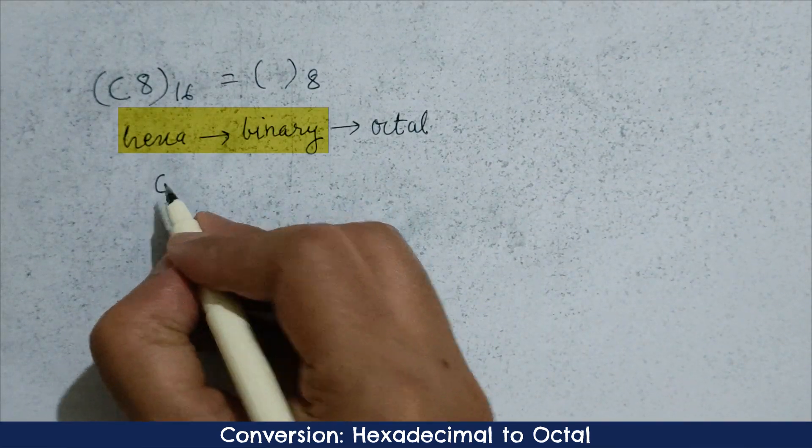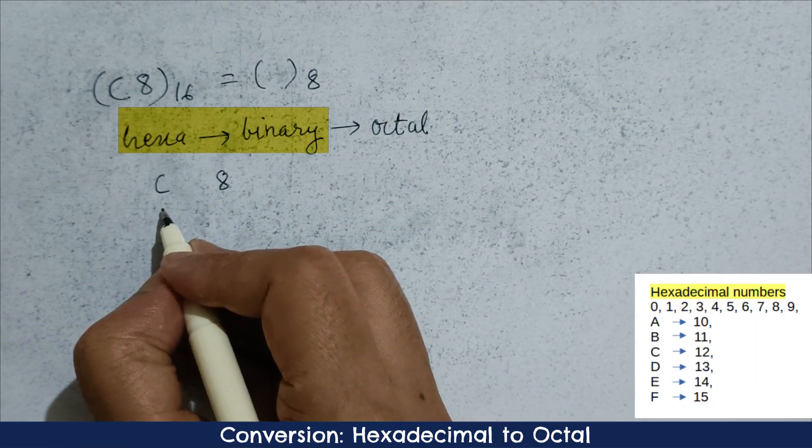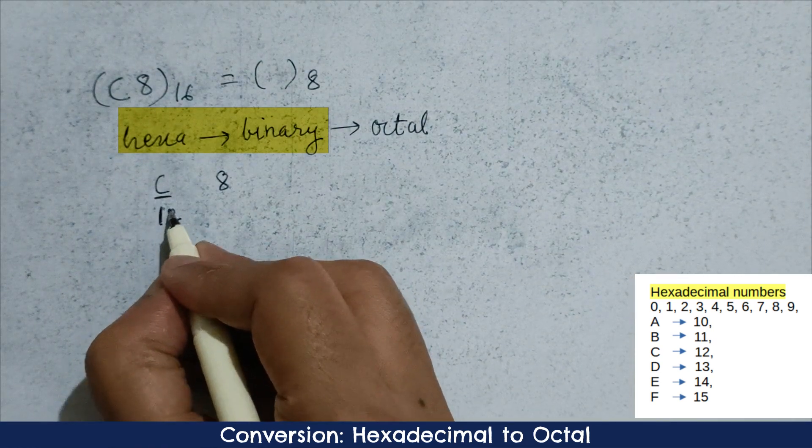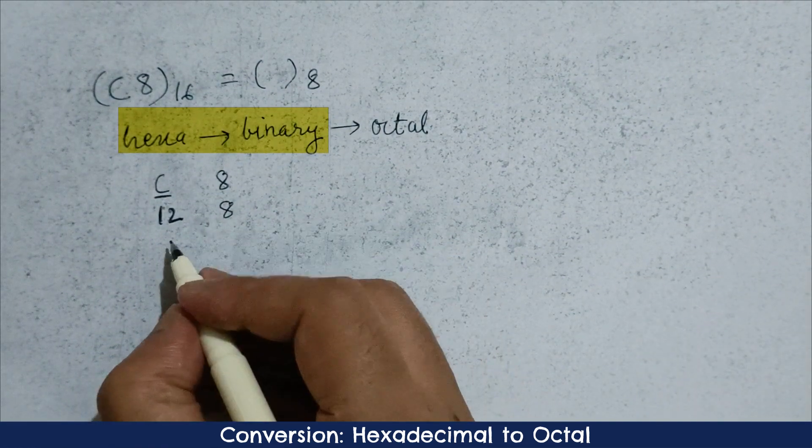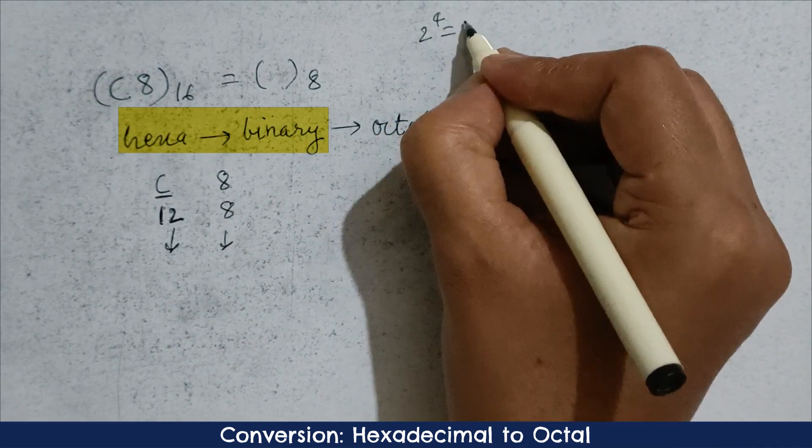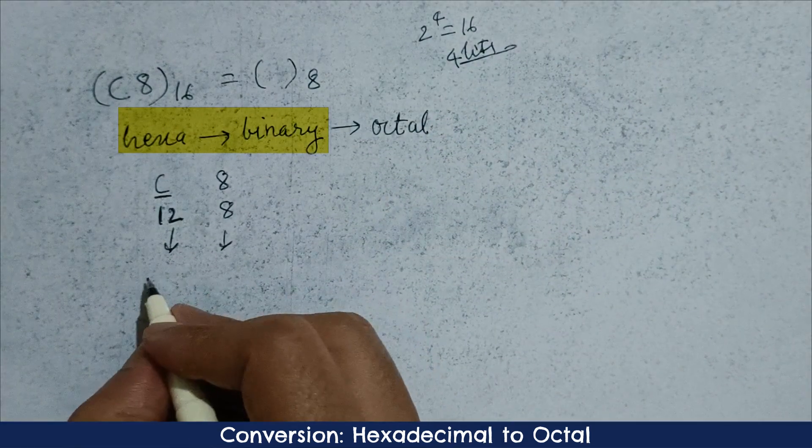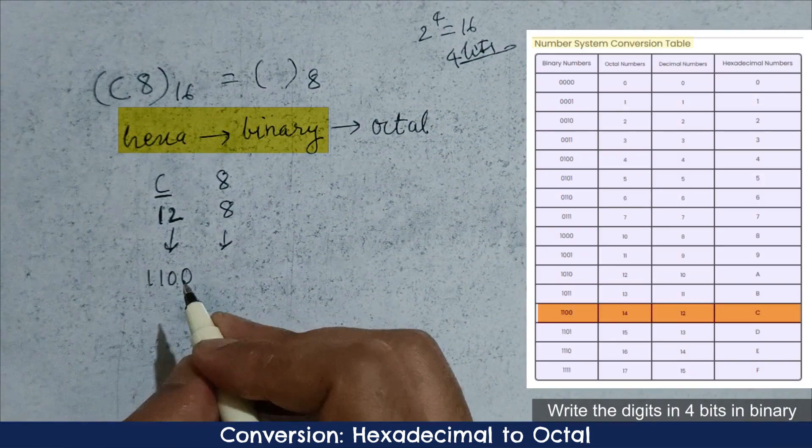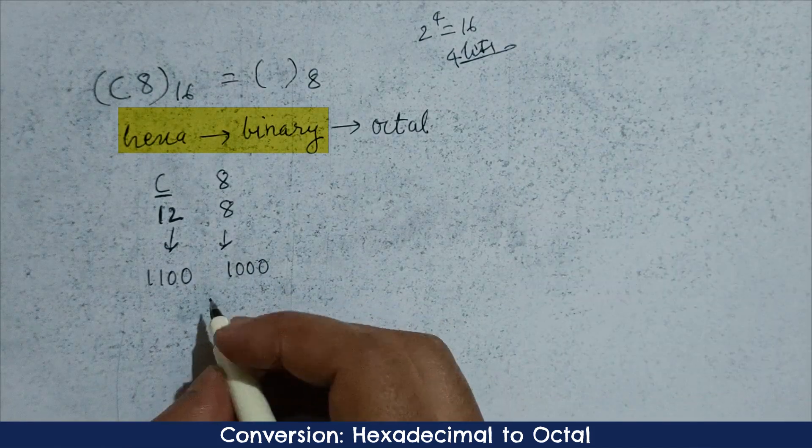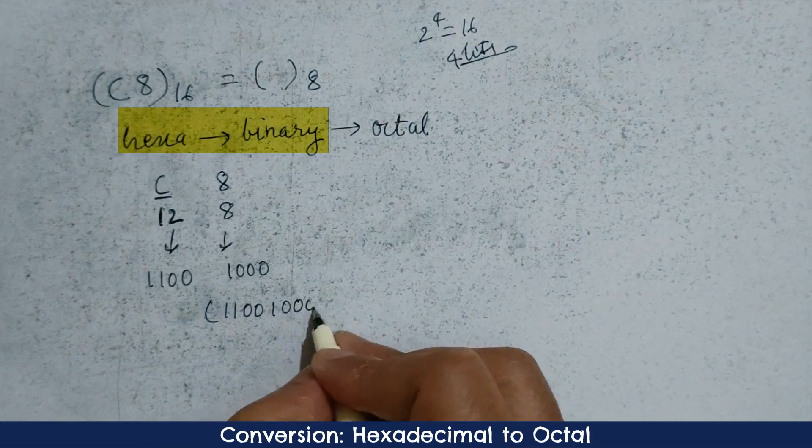Kindly write down the number C8. We can write C as 12. As we already know, we use 4 bits for representing hexadecimal in number system conversion table. We can write 12 as 1100 and 8 as 1000 in binary. So, required binary will be 11001000.